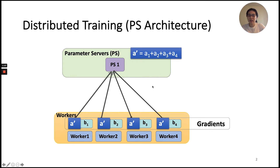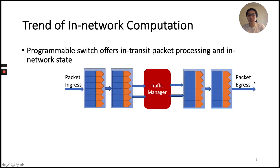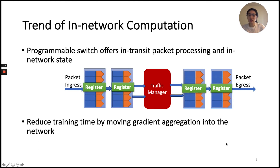As we can see, this traffic pattern can lead to incast, and the last link to the PS can be the network bottleneck. We think that programmable switches with in-network processing can reduce this bottleneck. The programmable switch offers in-transit packet processing and in-network state. Users can program the switch ingress and egress pipeline and store state across packets in switch memory, which we call registers. This suggests an opportunity to reduce training time by moving gradient aggregation into the network.